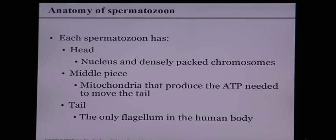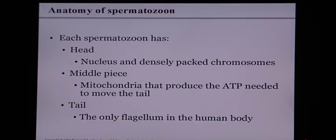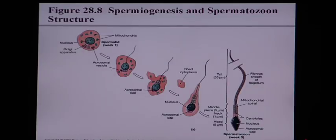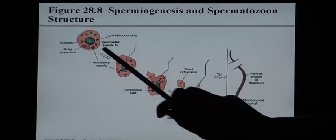Each spermatozoon — one mature sperm cell — has three parts: a head, a middle piece, and a tail. The head contains dad's DNA — 23 of the father's chromosomes — packed into the nucleus. The middle piece contains mitochondria that power the tail. Sperm are very active and use their tails to swim toward the egg, so the mitochondria must produce lots of ATP. The tail is the only flagellum in the human body.